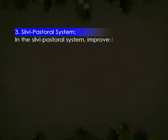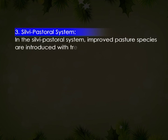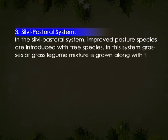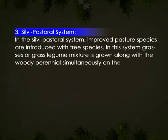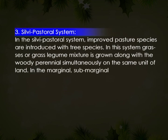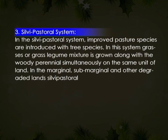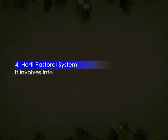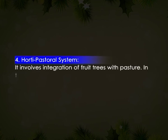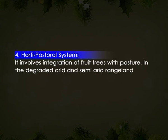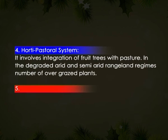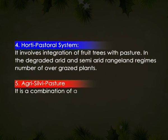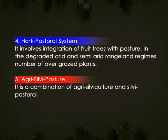In the silvopastoral system, improved pasture species are introduced with tree species. Grasses or grass-legume mixtures are grown along with woody pioneer species simultaneously on the same unit of land. In marginal and sub-marginal and other degraded lands, the silvopastoral system has been found to be the most economic agroforestry system, especially in arid and semi-arid regions. It involves integration of fruit trees with pasture in degraded arid and semi-arid regions with a number of over-grazed plants.